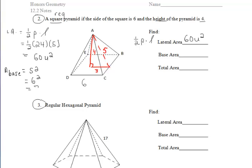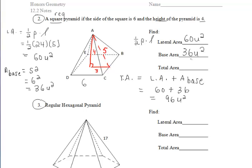To find the area of the base, it's pretty straightforward — it's a square, so we do side squared with a side of six to get 36 units squared. To find the total area of this pyramid, we take our lateral area of 60 units squared and add the base area to get 96 units squared.